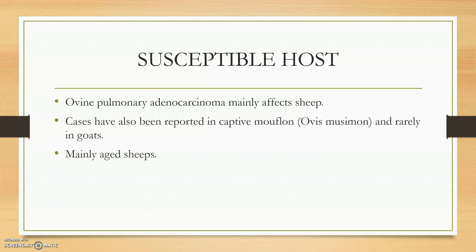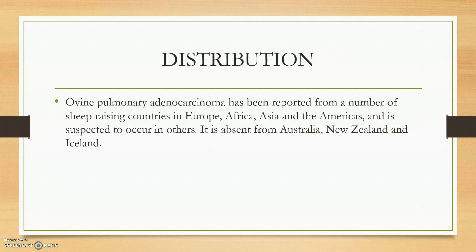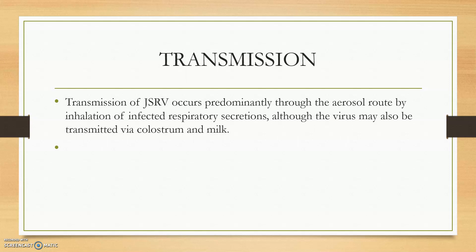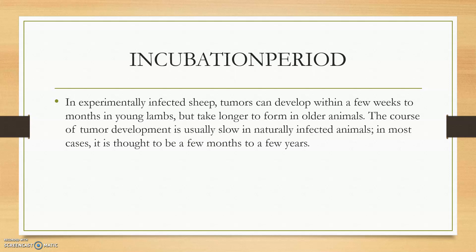Susceptible hosts are mainly sheep, particularly aged sheep. Distribution is present in Europe, Africa, Asia, America, and many other countries. Transmission is mainly through the aerosol route, or through colostrum, milk, and respiratory infected secretions.